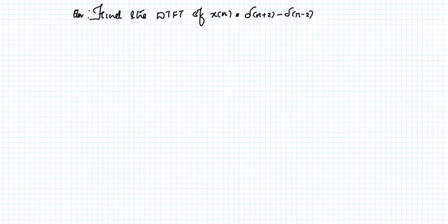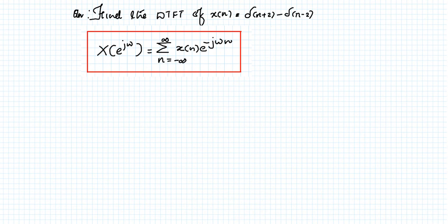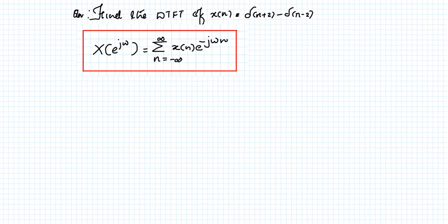In this lecture, we will see how to find the DTFT of the signal x[n] = δ(n+2) - δ(n-2). These are two impulse signals which are shifted. In order to find the Fourier transform of the signal, we need to use the formula X(e^jω) = Σ from n=-∞ to ∞ of x[n]·e^(-jωn). In place of x[n], it is given δ(n+2) - δ(n-2).